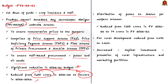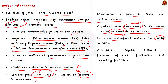Even for the distribution of pulses to states for welfare schemes, budget allocation has been reduced from 300 crores in 2021-22 to only 9 crores in 2022-23. The allocation for rural development was 5.59 percent in the previous budget and has been reduced to 5.23 percent. The allocation towards capital investment for promotion of rural infrastructure and marketing facilities has also decreased in the current budget.